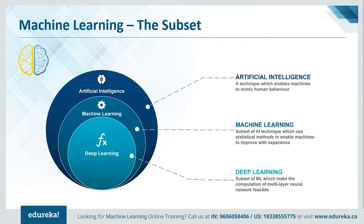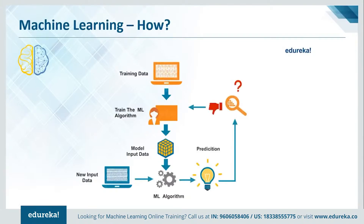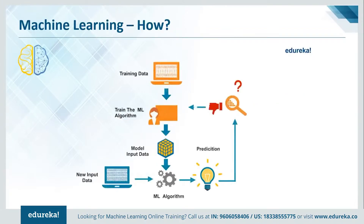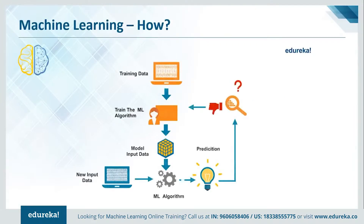Let's check out how machine learning actually works. First, we have some training data — it can be anything that acts as a data set. Consider a set of images of cats and dogs where you want the machine to tell which is a cat and which is a dog. Once the data set is established, we train the algorithm iteratively by providing input and teaching it to attain better accuracy. Next, we model the input data, the machine is already trained, we provide new input data and let the algorithm check if it's similar to our existing data by making comparisons, eventually making predictions.